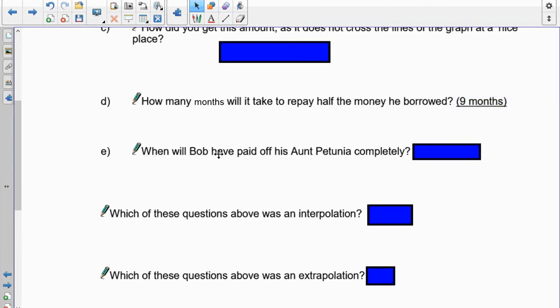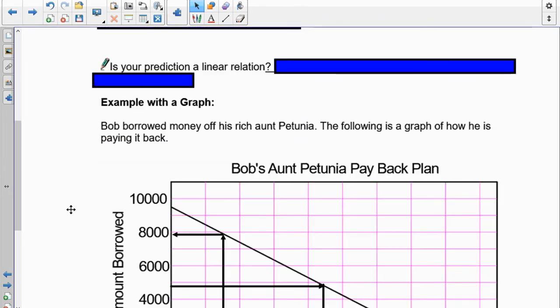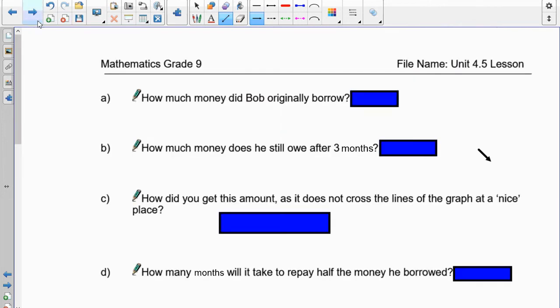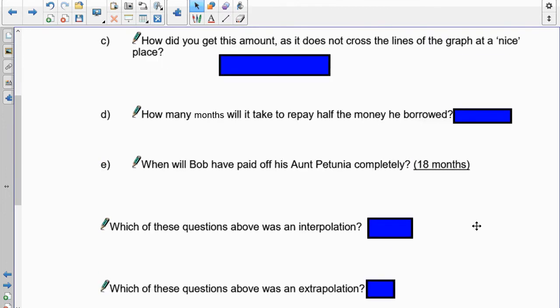Now, when will Bob have paid off Aunt Petunia completely? Well, in order to get Aunt Petunia paid off completely, Bob has got to make it down to no money left. So, we have to take the 9,000 and we have to go down our line and we have to figure out where is it going to end. And if you look right here, it's quite simple. It's almost exactly on 18 months.